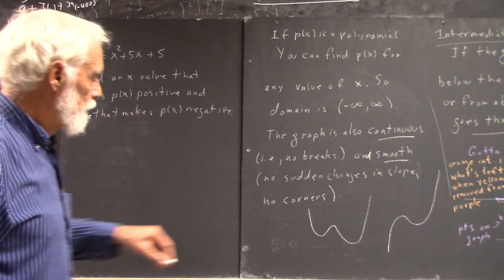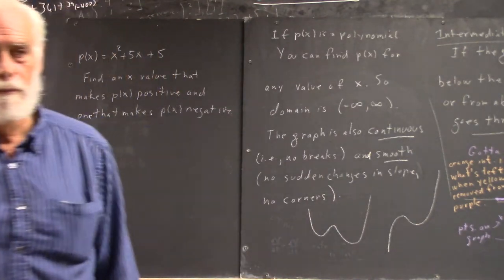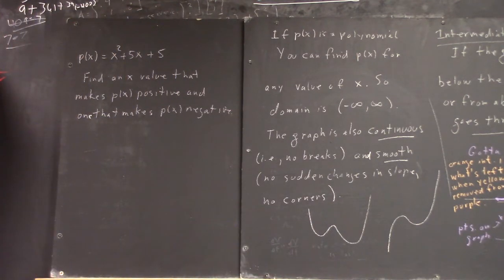And let's say x values between negative 5 and 5. Now, when x is negative 5, it's positive, when x is 5, it's positive, you can't use negative 5 and 5. So just start evaluating that for x values.